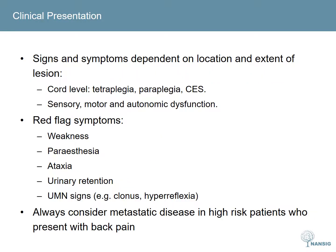Presentation of cord compression depends largely on the location of the lesion and the extent to which it impinges on it. For example, compression of the cord above the level of the first thoracic vertebra — so T1 — can lead to tetraplegia, paralysis of all four limbs, sometimes known as quadriplegia. Cord compression below T1 can cause paraplegia, that is, paralysis of the lower limbs.